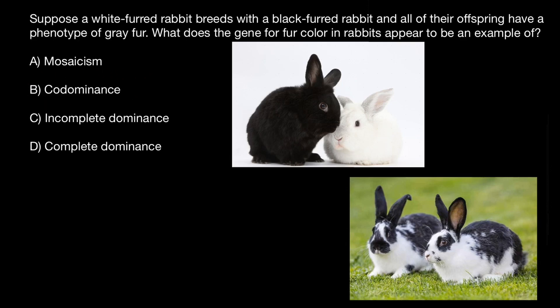When we have one trait — which is color — and two genotypes, we see that both black and white would be expressed in the progeny. So this is an example of co-dominance.